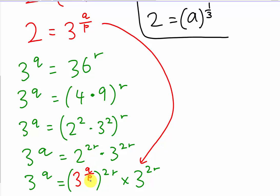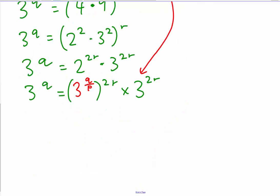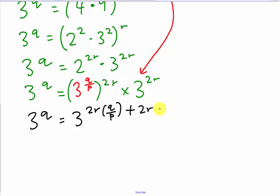So after substituting, I have 3^Q equals 3^(Q/P) raised to the power 2R, multiplied by 3^(2R). Using index laws, this becomes 3^Q equals 3 to the power of (2R times Q/P) plus 2R.